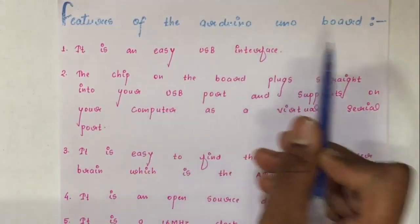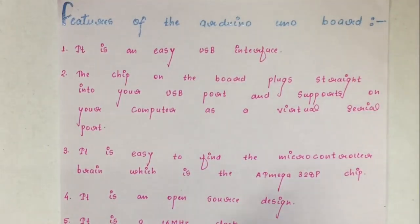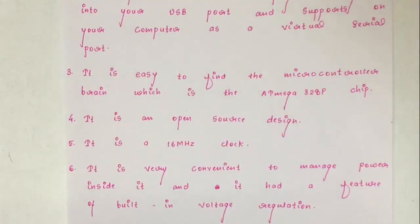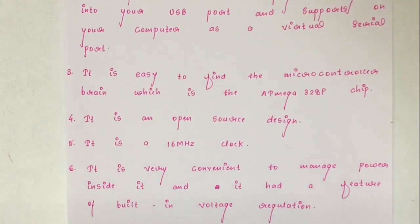Now let us talk about the features of the Arduino Uno board. First, it has an easy USB interface, allowing it to interface with USB as a serial device. The chip on the board plugs straight into your USB port and appears on your computer as a virtual serial port. Serial communication is an easy, time-based protocol and USB makes the connection with modern computers and makes it compatible. Third, it has an easy-to-use microcontroller brain — the ATmega328P chip — with hardware features like timers, external and internal interrupts, PWM pins and multiple sleep modes. Fourth, it is an open-source design with a large community of people using and troubleshooting it, making it easy to help debug projects.